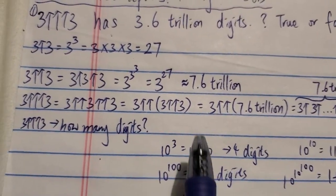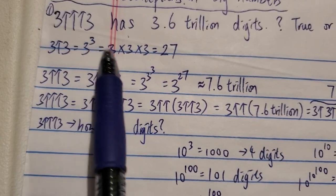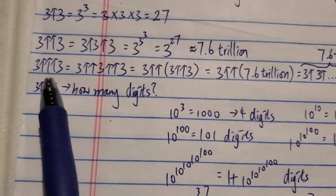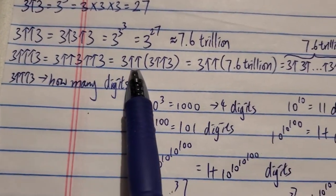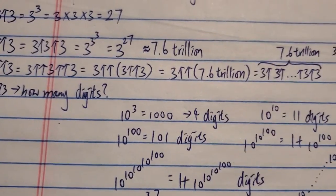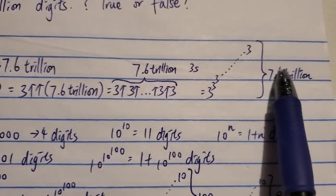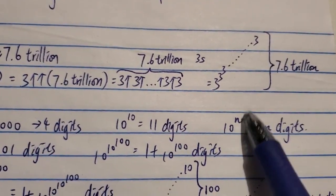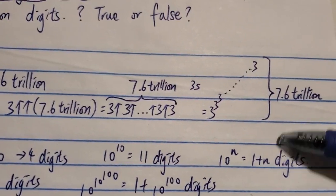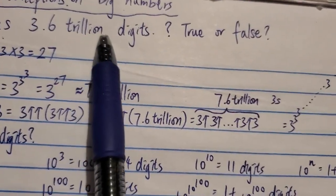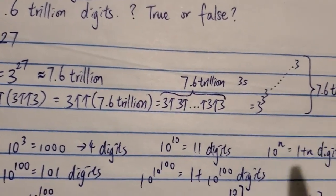You can read this yourself — pause the video. So 3↑3 is 3 to the 3, which is 27. 3↑↑3 is 3 to the 3 to the 3, which is around 7.6 trillion. And 3↑↑↑3 is 3↑↑3↑↑3, which is 3↑↑(7.6 trillion), because 3↑↑3 is around 7.6 trillion. So this is 3 to the 3 to the 3... with 7.6 trillion 3s. If you understand how this works, you already know this has way more than 3.6 trillion digits, because just the number of 3s in this tower is already 7.6 trillion.